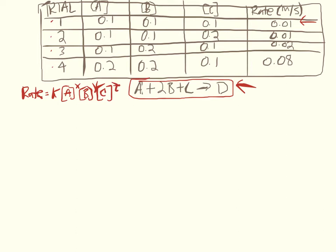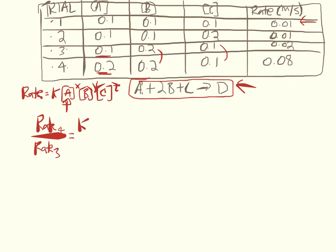To figure out the exponents, the goal is to find two trials where the concentration of one reactant is changing but the others are staying constant. To find the order with respect to A, we need trials where A changes but B and C are constant — that's trials three and four, where A goes from 0.1 to 0.2 molar. We set up a ratio: rate of trial 4 over rate of trial 3.